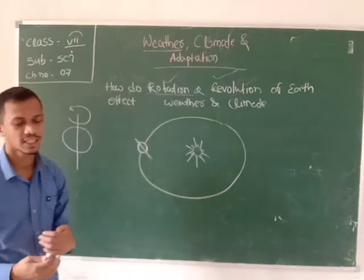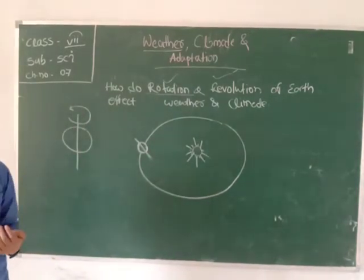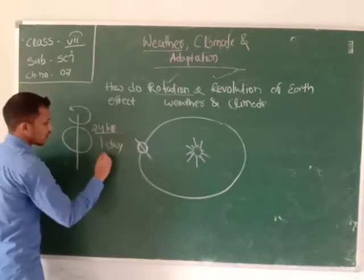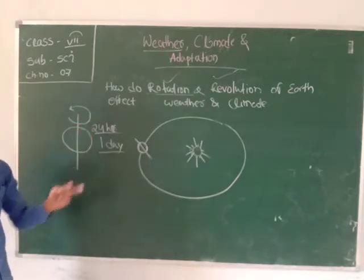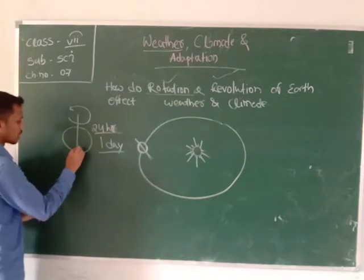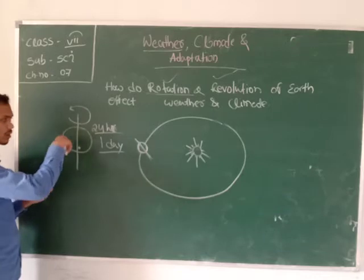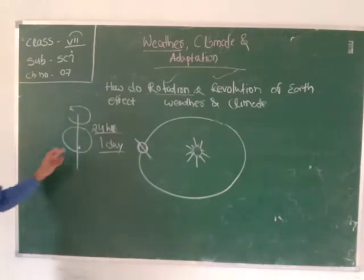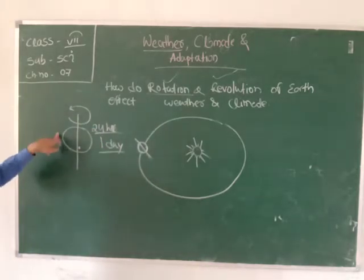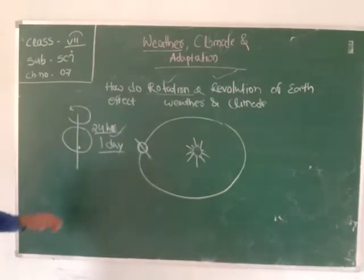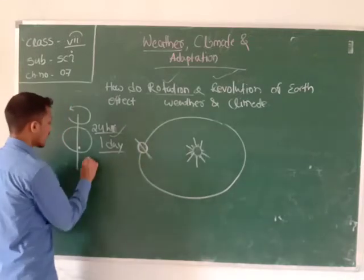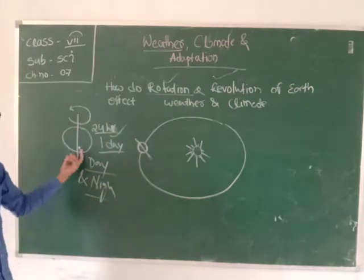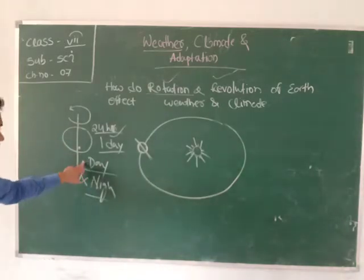How much time does the Earth take to complete one rotation? It takes 24 hours. That is why one day is 24 hours — because the Earth takes 24 hours to complete one rotation. Due to the rotation of the Earth around its axis, we feel day and night. Those parts facing the sun capture sunlight and feel daytime, while those behind do not receive sunlight and feel night.